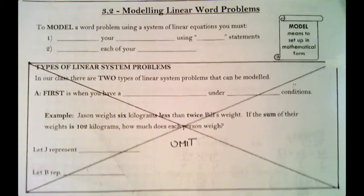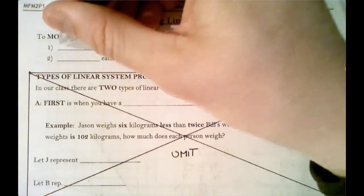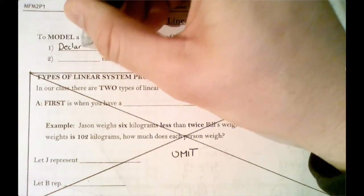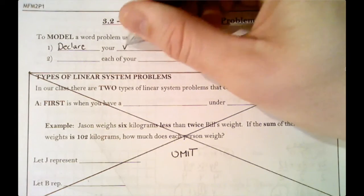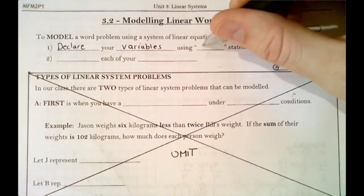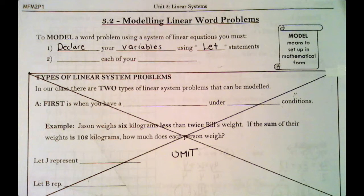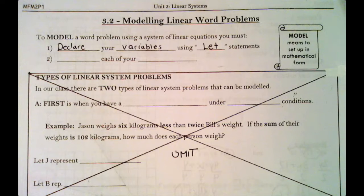When we're looking at word problems, to model a word problem means to develop a system of equations. Our first step is to declare the variables we're going to use, which means what letters are we using and what do those letters represent. We do that by saying let statements. So if we're writing equations of lines, we usually have y equals mx plus b. Well, what's the y and what's the x?